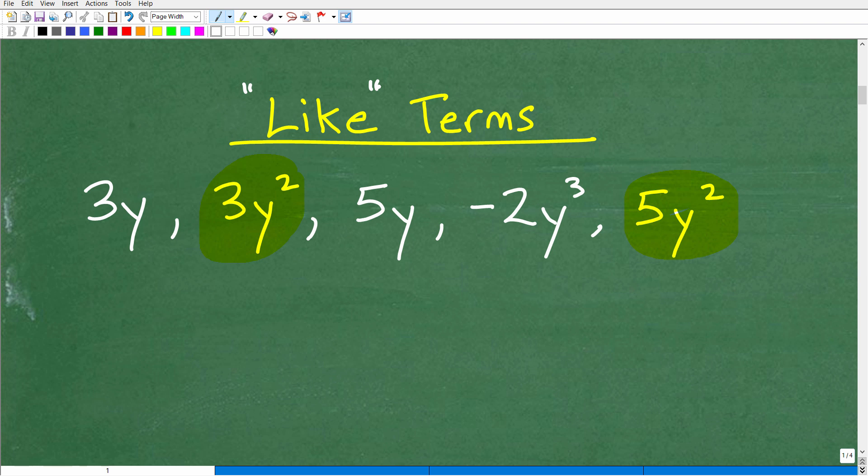But what makes two terms like terms is that their variable and power to that variable is exactly the same. So here we have 3y squared and here we have 5y squared. Each of these terms must have y squared.